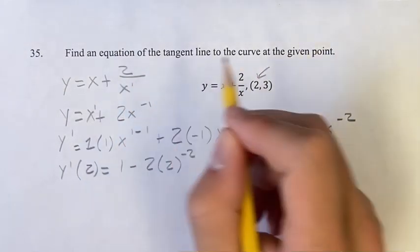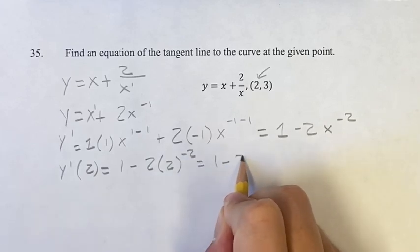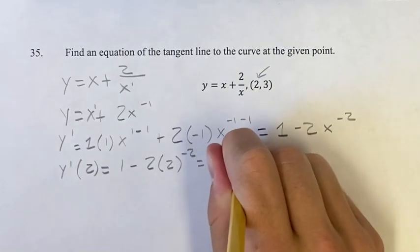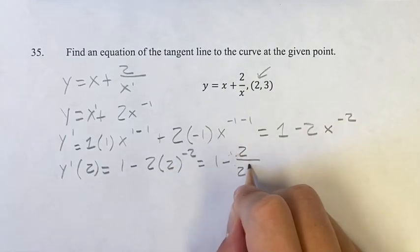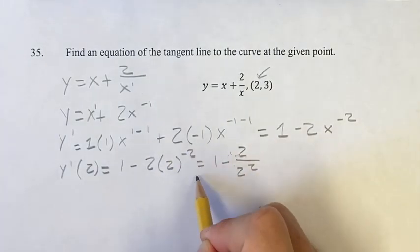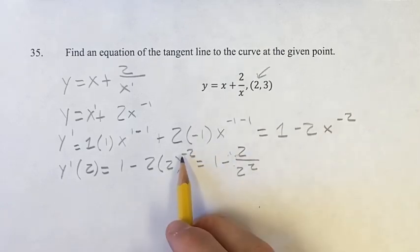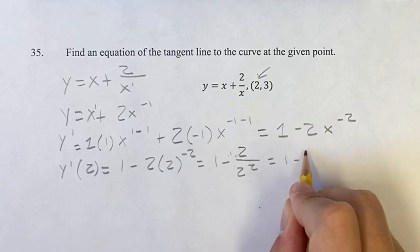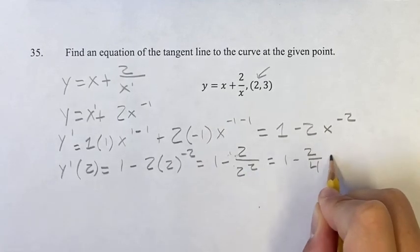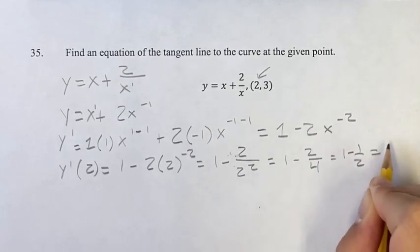Again, we can do the opposite of what we just did. 1 minus, let me make this a little bit clearer, 2 over 2 squared, right? I want to bring it back down, multiply it by negative 1 again. Negative 2 times negative 1 is 2. And this is going to be 1 minus 2 over 2 squared is 4, 1 minus 1 half is 1 half.